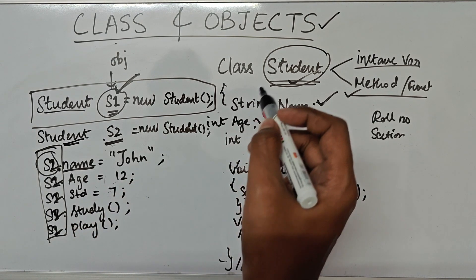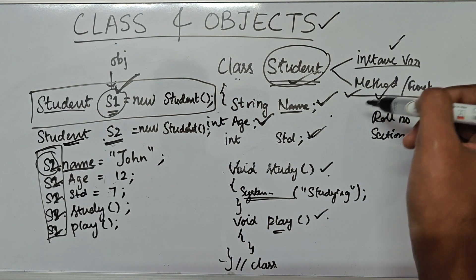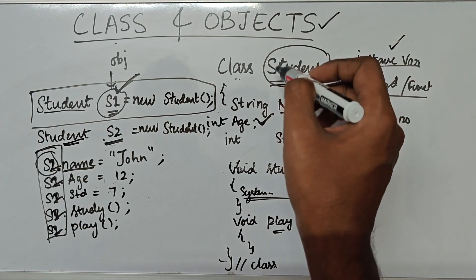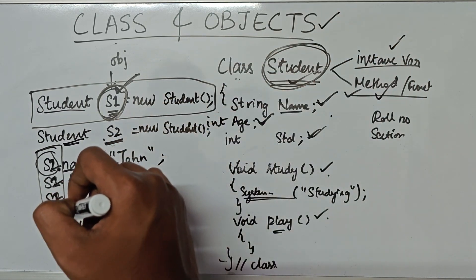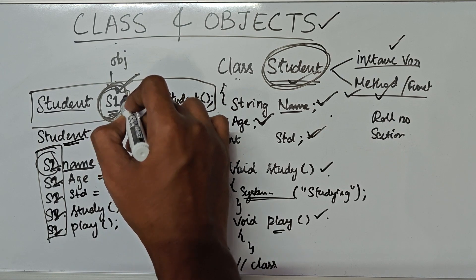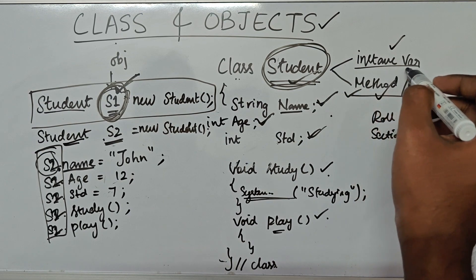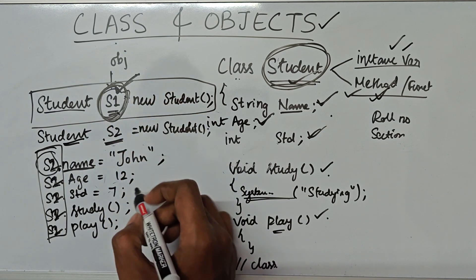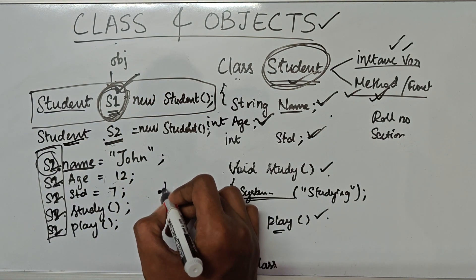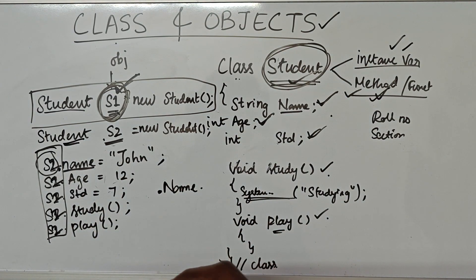So let me give you a recap. Class is like a blueprint. A class will have instance variables and methods. Any object created of that class — in this case, the Student class — will have all the instance variables and methods. Using the object and the dot operator, we can access anything from the class. If you learned something from this video, please leave a like and consider subscribing to this channel. Thank you.